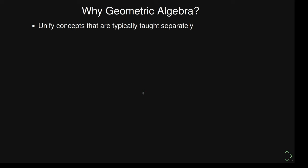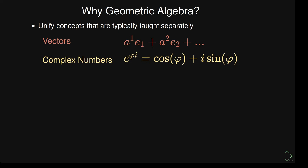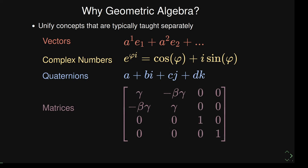Another thing it unifies is different concepts such as vectors, complex numbers, quaternions, and matrices. Usually we treat these as completely separate, but with Geometric Algebra these are actually part of one kind of concept.